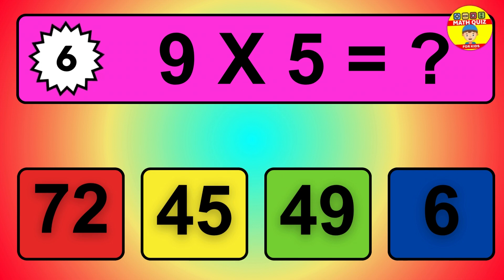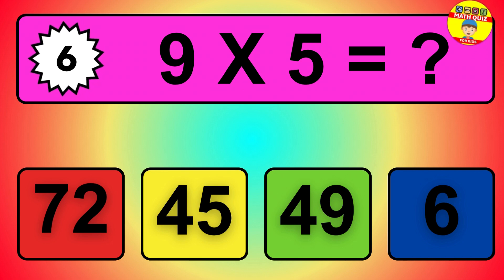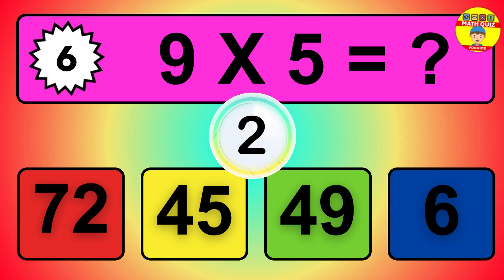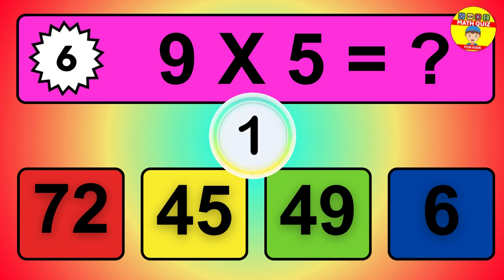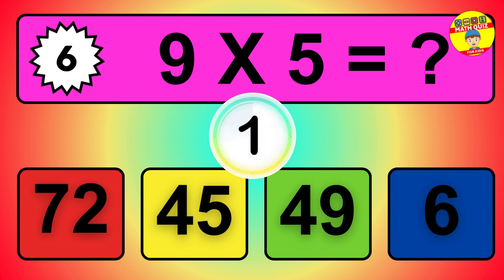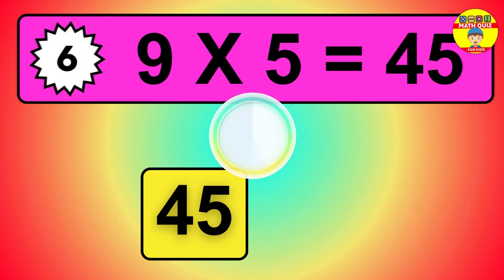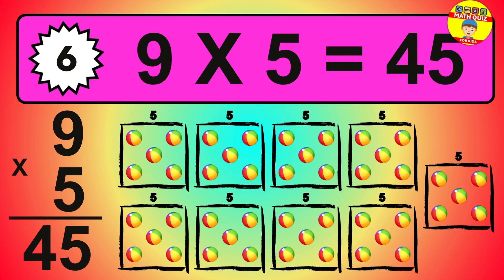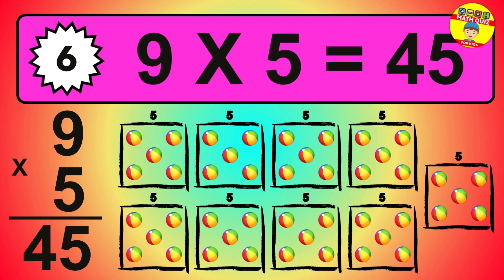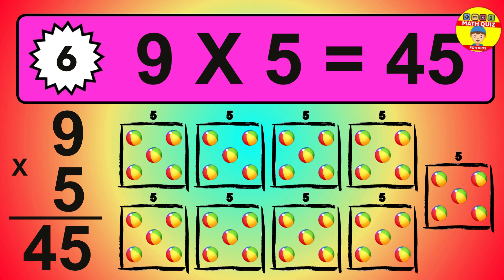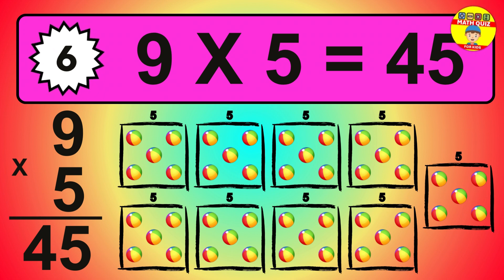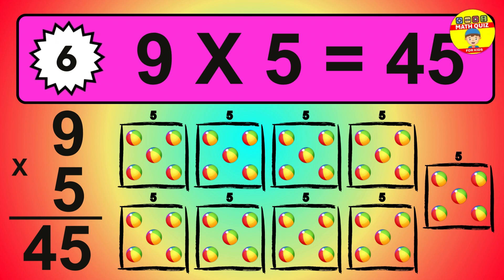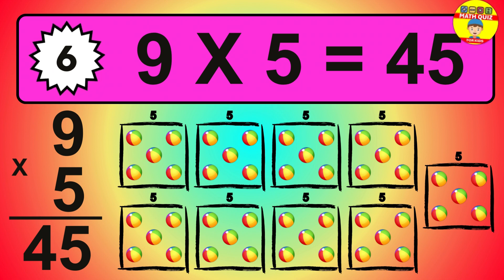Question 6. 9 times 5 equals what? The answer is 9 times 5 is 45. To calculate, we have 9 groups with 5 balls each one. So how many balls do we have? 45 balls.